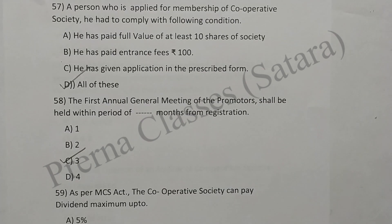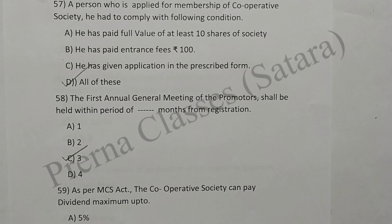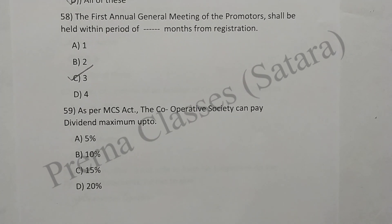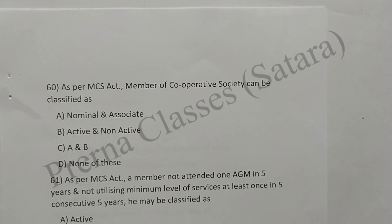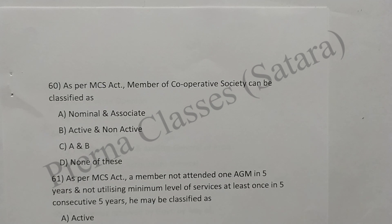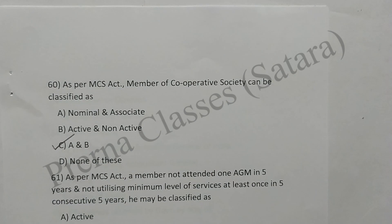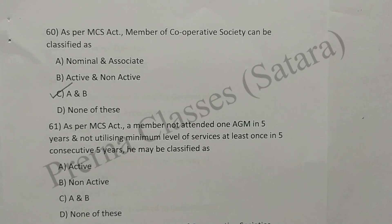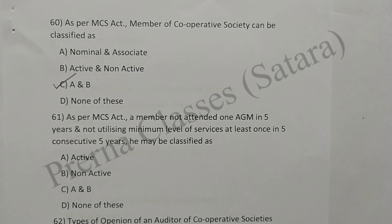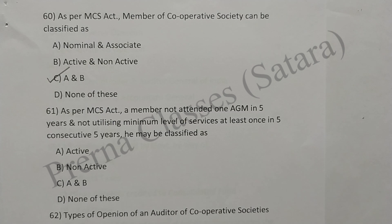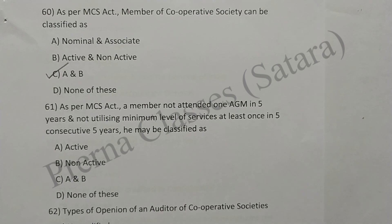Question 59: As per MCS Act, a cooperative society can pay dividend maximum up to 15%. Option C is correct. Question 60: As per MCS Act, members of a cooperative society can be classified as nominal, associate, active, non-active — A and B. Option C is correct. Question 61: As per MCS Act, a member who does not attend one AGM in five years and does not utilize minimum level of services at least once in five consecutive years may be classified as non-active. Option B is correct.